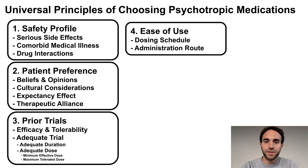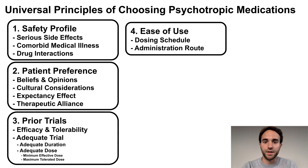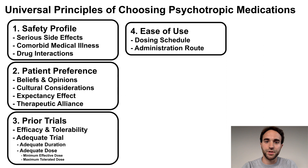Fourth, consider the ease of use. This involves the dosing schedule, or how often the medication needs to be administered in a day, and the administration route — that is, whether it is taken by mouth, injection, a skin patch, or another method. For example, a once-per-day medication is easier to use than a twice-per-day medication, and an oral medication is easier to use than an injection medication.